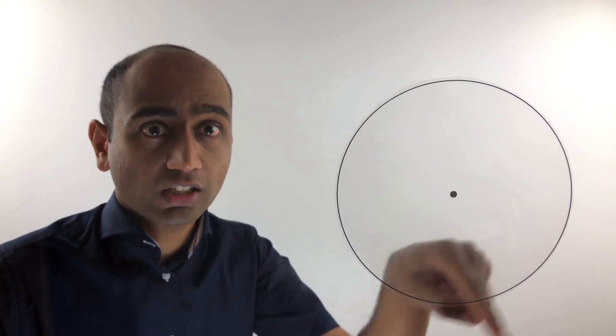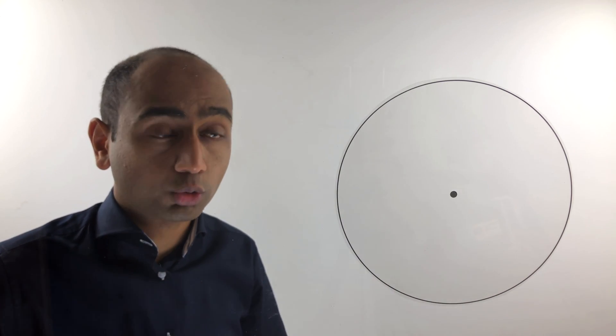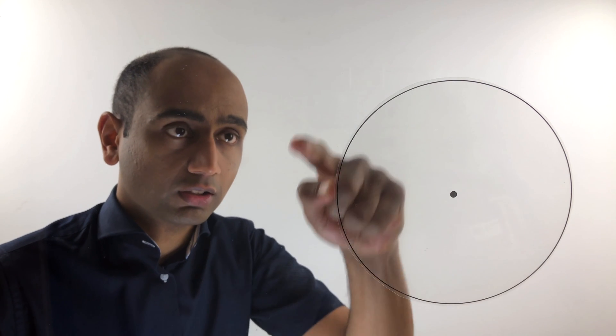In this video we are looking at circles. A circle is simply the set of points that is a fixed distance away from a centre.